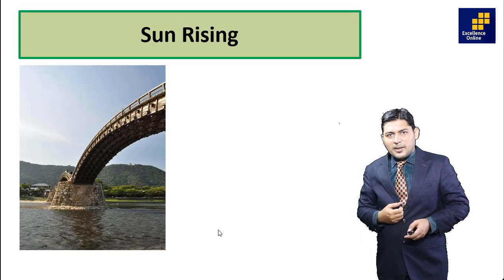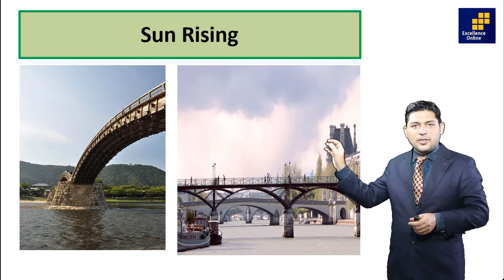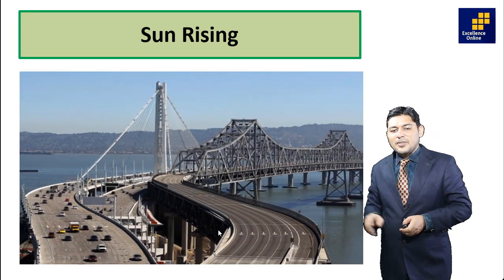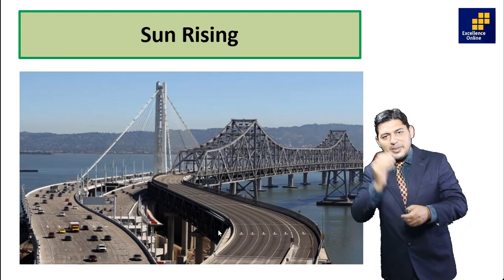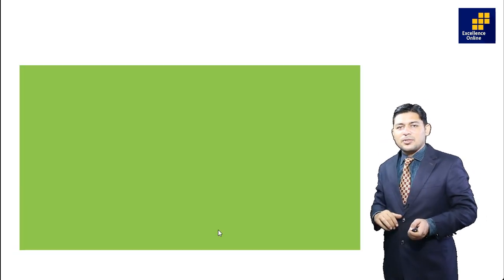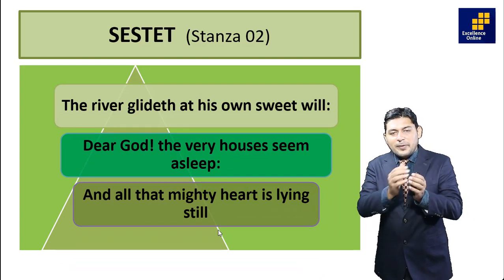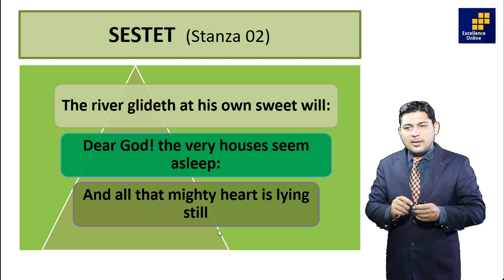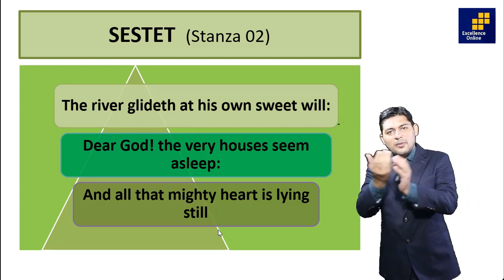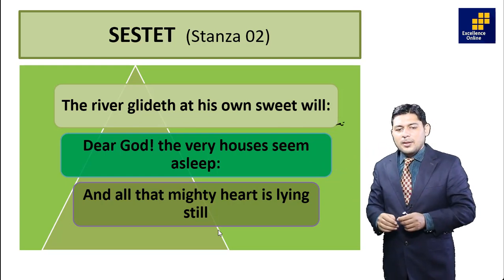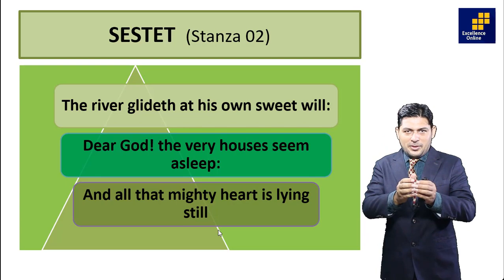Sun rising is always an appealing scene. Early in the morning the sun is rising — it is a kind of affection, a beauty, an appealing element in human nature. 'The river glideth at his own sweet will' — 'glideth' means flows. Besides artistic beauty and natural beauty, we have the flow of the river as another factor.